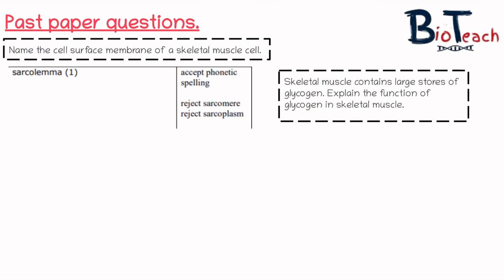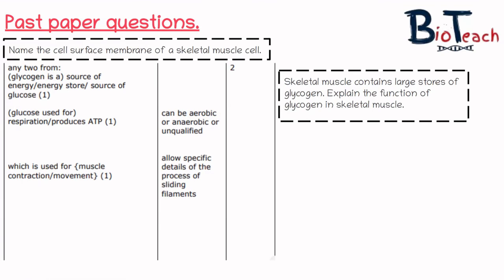The next question says: 'Skeletal muscle contains large stores of glycogen. Explain the function of glycogen in skeletal muscle.' The mark scheme says you need to state that glycogen is a source of energy or an energy store — you could also say it's a source of glucose. That glucose goes forward for respiration and produces ATP, and for another mark you can say that ATP is used for muscle contraction or movement. Learning answers in terms of the mark scheme is important — it means you don't write too much in the exam and you get straight to the point.